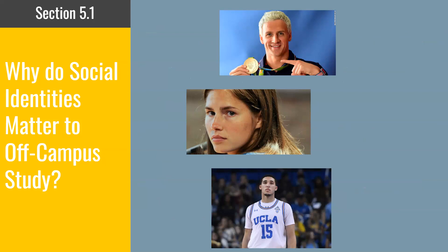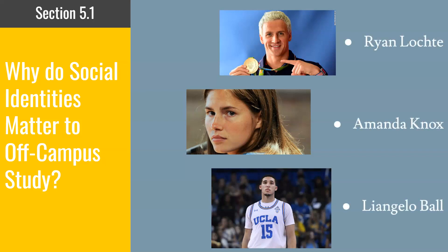For example, who are these people? If you guessed Ryan Lochte, Amanda Knox, and LiAngelo Ball, you are correct. These three people are being shown because they are all U.S. individuals who have had incidents happen while internationally that are important to understand when it comes to identity.